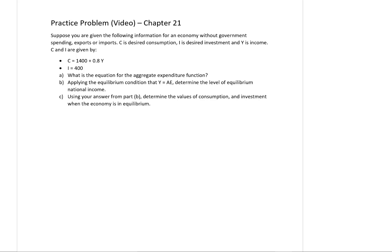In this video, we're going to solve a numerical example of the simplest macroeconomic model that we've learned in this chapter. So the question reads: suppose you are given the following information for an economy without government spending, exports, or imports. C is desired consumption, I is desired investment, and Y is income.